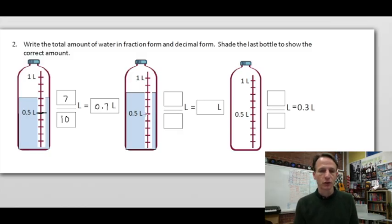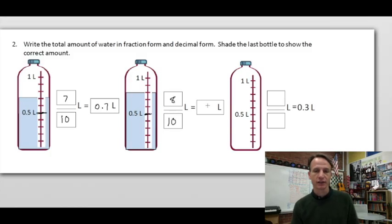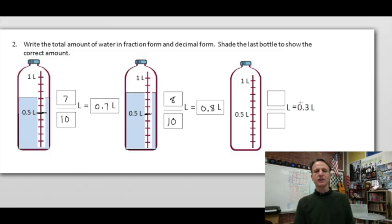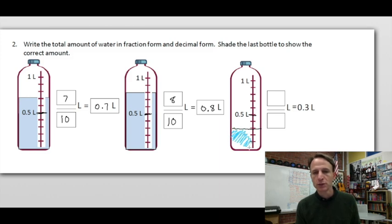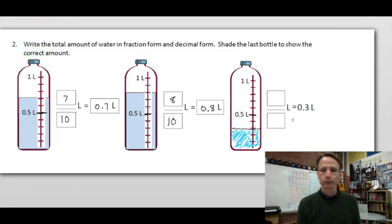The next bottle is at eight tenths, so as a fraction we write 8/10, and as a decimal we write 0.8. For the last bottle, we're given a value of three tenths — so if five tenths is here, we count back to shade up to three tenths. I'll change colors to blue to draw it in. There's my three tenths water bottle — looks really good!